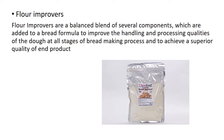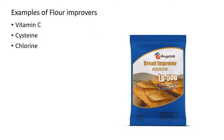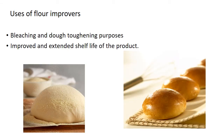Now let us see what flour improvers are. Flour improvers are a balanced blend of several components which are added to a bread formula to improve the handling and processing qualities of the dough at all stages of the bread making process and to achieve a superior quality end product. Examples of flour improvers include Vitamin C, cysteine, and chlorine.